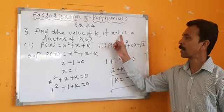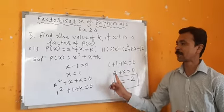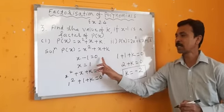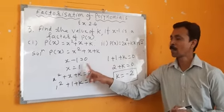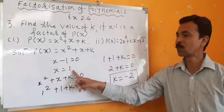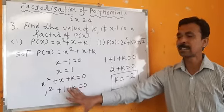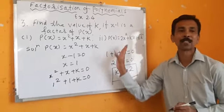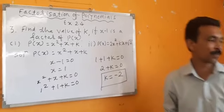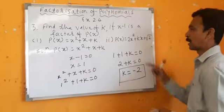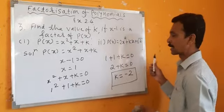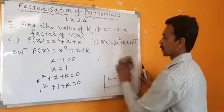Have you understood the method? x minus 1 is the factor means x minus 1 equals 0, then x equals 1. Place this in P of x and proceed further — you will get the value of k. Now we will see the second bit.